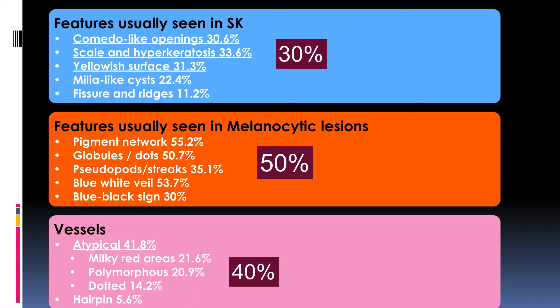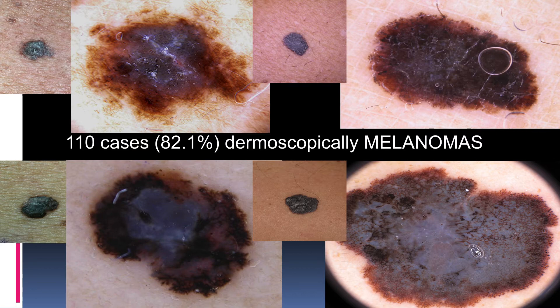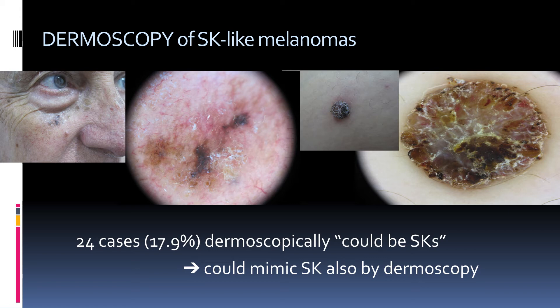We demonstrated that almost half of the lesions showed melanocytic criteria, 30% of these lesions can present features usually seen in seborrheic keratosis, and very importantly, 40% of the lesions present atypical vessels. Most of the cases — more than 80% of this series — can be easily diagnosed by dermoscopy, as in these four examples where you can easily detect that these are melanomas. But about 18% of cases, even by dermoscopy, could mimic a seborrheic keratosis, as in these two challenging cases.